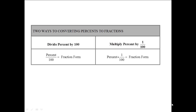There are two ways to convert percents to fractions. You can divide the percent by 100, or you could multiply the percent by 1 over 100. Sometimes it is more convenient to divide the percent by 100, and sometimes — especially when the percent is in fraction form — it is easier to multiply by 1 over 100. We will utilize these two different ways with different types of problems as they come up.